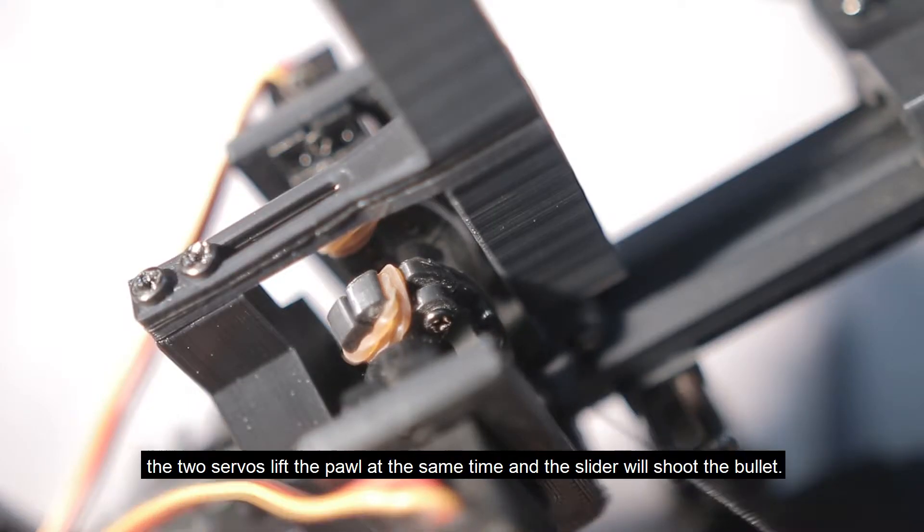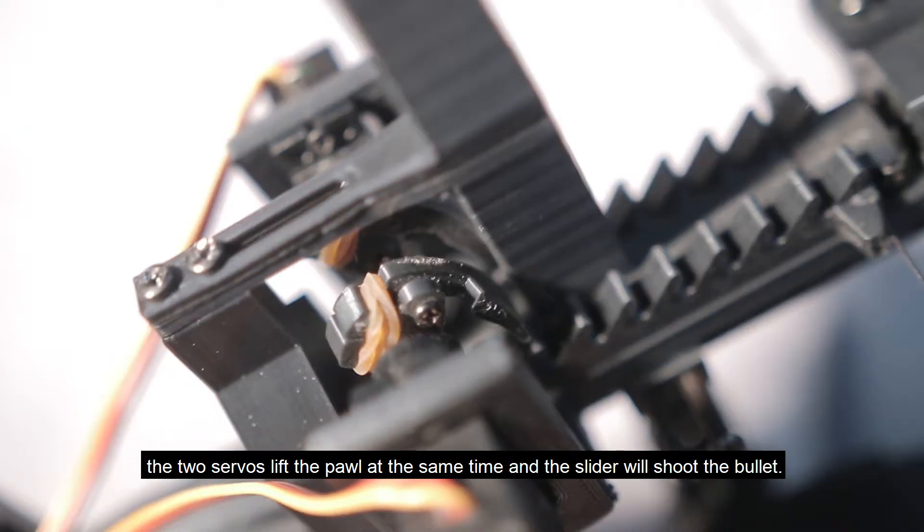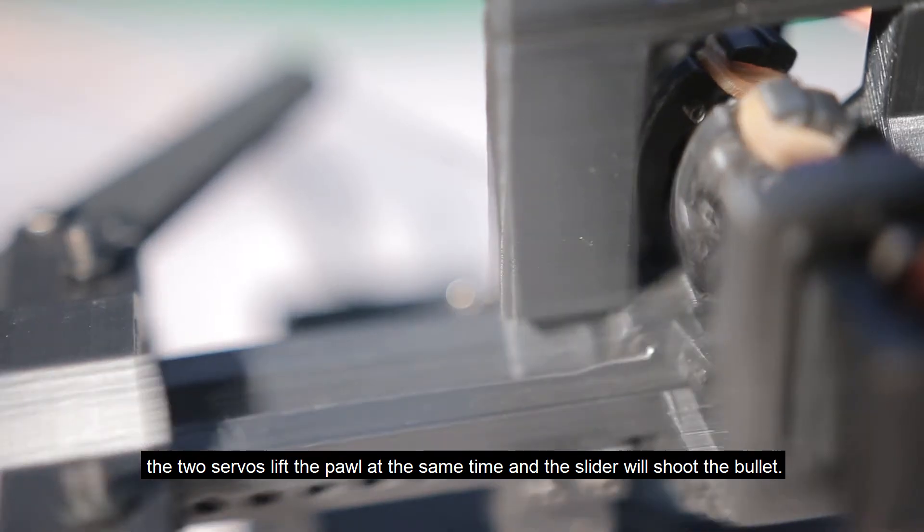When discharging, the two servos lift the pawl at the same time and the slider will shoot the bullet.